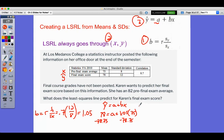So I can write my final least square regression line. I want to put it in context. So the exam is predicted to be negative 0.75 plus 1.05 times my average, my pre-exam average.